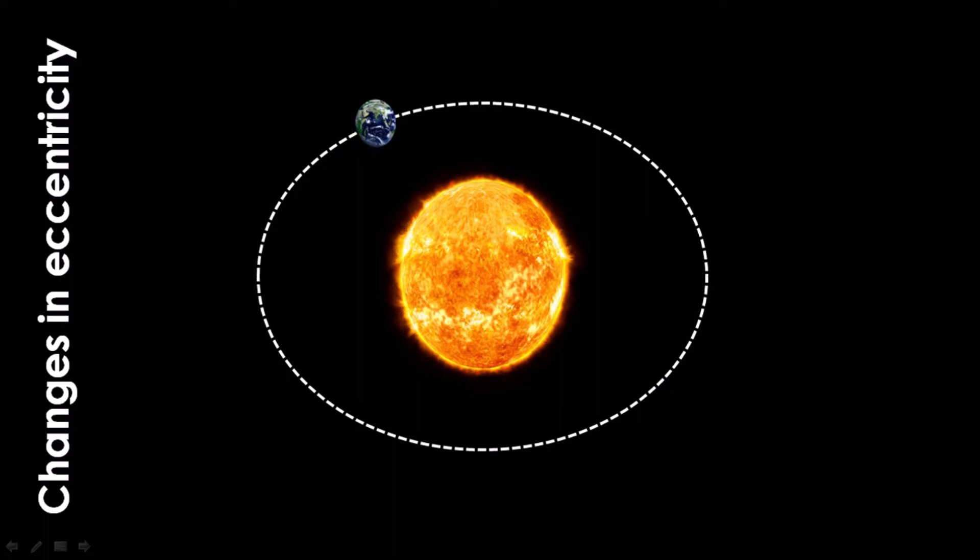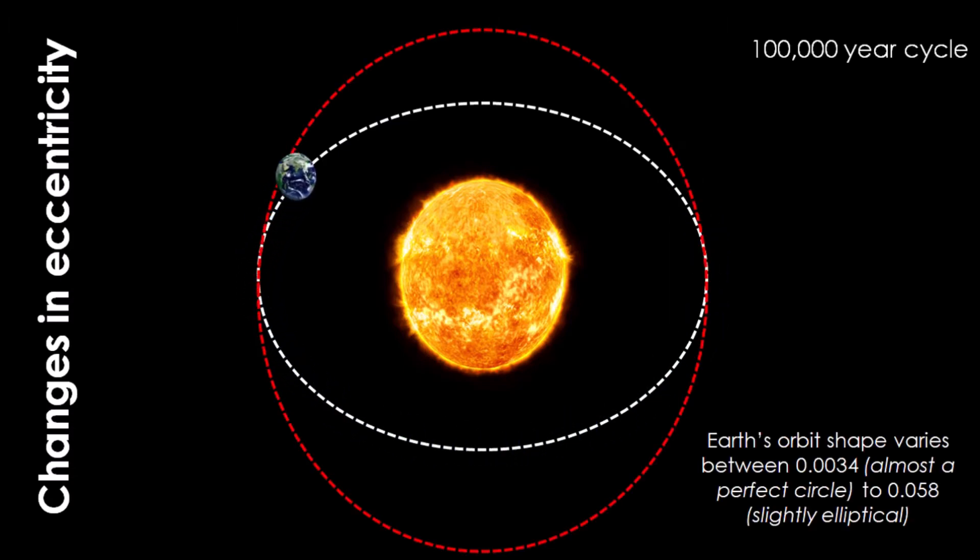This concept of eccentricity measures how much the shape of the Earth's orbit departs from a perfect circle and changes from a circular shape to an elliptical shape over a number of years. These variations affect the distance between the Earth and the sun. So as the Earth orbits closer to the sun, the climate becomes warmer and the opposite happens as it orbits away.